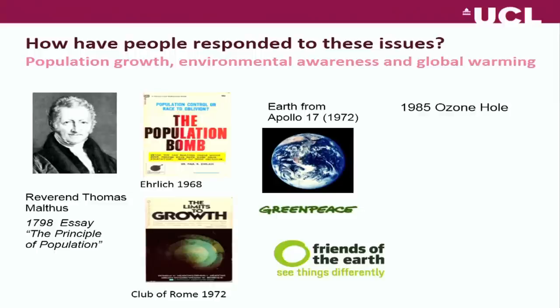Not surprisingly, there was a surge of environmental activism around this time when Friends of the Earth and Greenpeace emerged. Beautiful photos of the Earth from space increased people's environmental awareness, contrasting sharply with news about huge oil tankers leaking and nuclear disasters. In 1985, the British Antarctic Survey discovered a hole in the ozone layer, leading to a period of environmental diplomacy with various agreements being signed. Concerns about global warming surfaced at that time too, and the IPCC was first established in 1988.